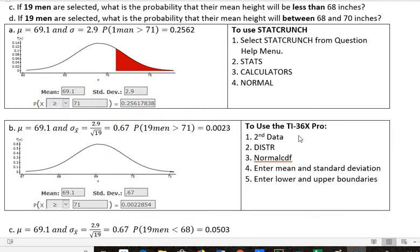So if you wanted to use your TI-36X Pro to do that, you would put in second function data, then go over to distribution, down to normal CDF. You would enter the mean and the standard deviation, and then enter the lower and upper boundaries. In this case, the lower boundary would be 71, and the upper boundary would be infinity, which is the 1 times e to the 99th that's already entered into your calculator. I have videos on StatCrunch and TI-36X Pro for this already. So I'm not doing another video, just a quick reminder of how to do that.